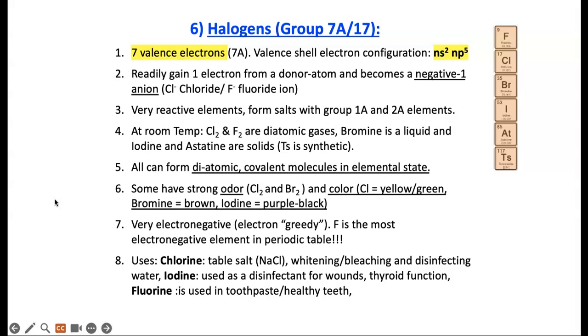Sixth topic are halogens. These are the group 7A elements. Their electron configuration is S2P5. They have 7 valence electrons. They readily gain 1 electron from a donor atom. Losing 7 is a lot harder than gaining 1. If they gain 1, they look like the nearest noble gas, and that's what they do. They form negative 1 anions like Cl minus or F minus for fluoride ion. They are very reactive elements. They form salts with group 1A and 2A elements. They form ionic compounds.